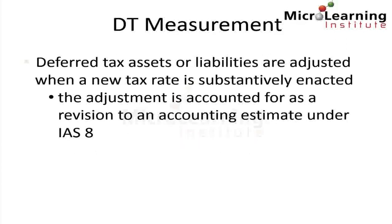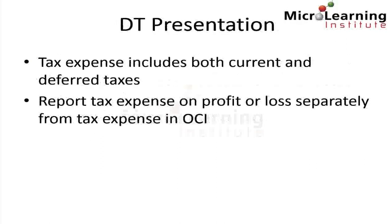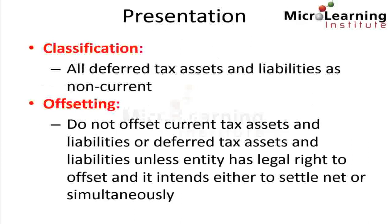Deferred tax assets or liabilities are adjusted when a new tax rate is substantively enacted. This adjustment is accounted for as a revision to an accounting estimate under IAS 8. The tax expense in profit and loss includes both current and deferred taxes. We report the tax expense on profit or loss separately from tax expense in other comprehensive income. On the statement of financial position, all deferred tax assets and liabilities are presented as non-current. We do not offset current tax assets and liabilities or deferred tax assets and liabilities unless the entity has the legal right to offset them and the entity intends to either settle net or simultaneously.